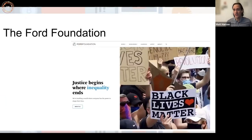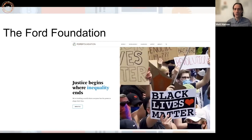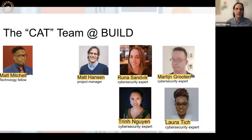JSAT was actually born originally from the Ford Foundation — a pretty prominent, well-known philanthropic organization. It's one of the world's oldest and largest philanthropies, and it funds projects and programs around the world that combat inequality. That can take a lot of different forms, from funding organizations like GIJN and supporting other types of causes worldwide. Runa and I were lucky enough to collaborate with Ford on this project. We were part of a team known as the CAT team — the Cybersecurity Advisory Team within Ford — led by Matt Mitchell, who was at that time a Ford Foundation Technology Fellow.